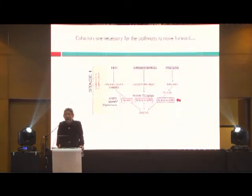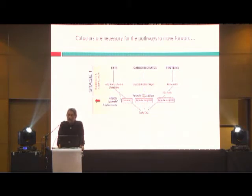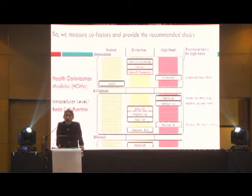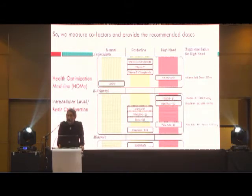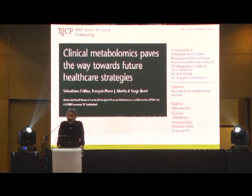Cofactors are necessary to move the pathways forward. Carnitine is necessary to shuttle fats to the mitochondria. For carbohydrates and proteins to enter the citric acid cycle, they need vitamins B1, B2, B3, and lipoic acid. This is the reason why we measure all of these metabolites — to detect deficiencies or toxicities. So we measure the cofactors and provide the recommended doses. For example, in this patient, we have severe deficiencies in alpha-lipoic acid, B1, B2, and B9.